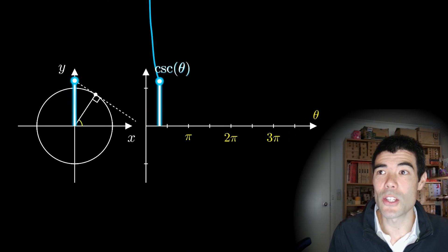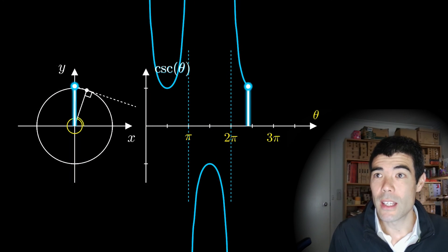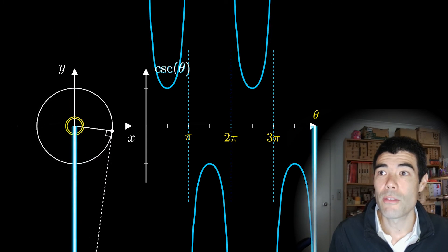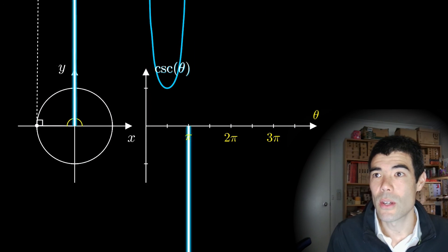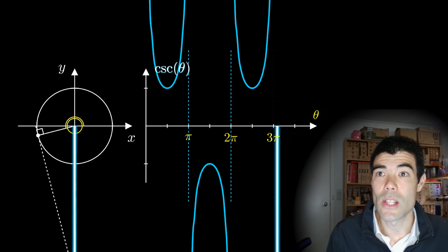Now, with the cosecant function, which is the reciprocal of sine, we can measure it vertically here, and again, it lines up really nicely with the graph, just like the graph of sine. We can see this cosecant function shooting off to infinity as sine approaches zero.